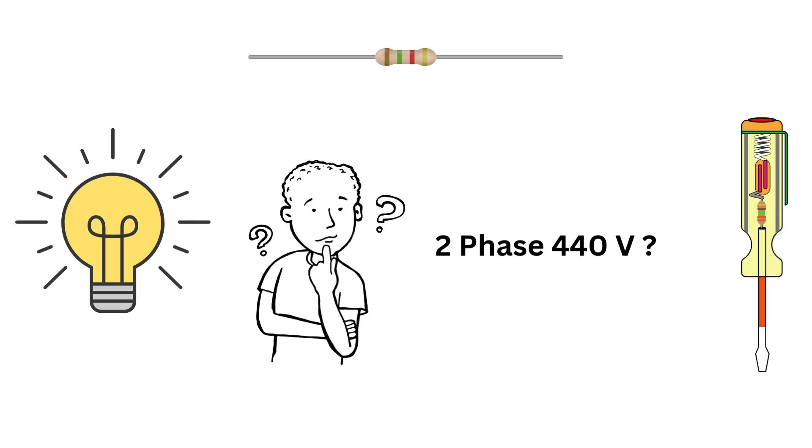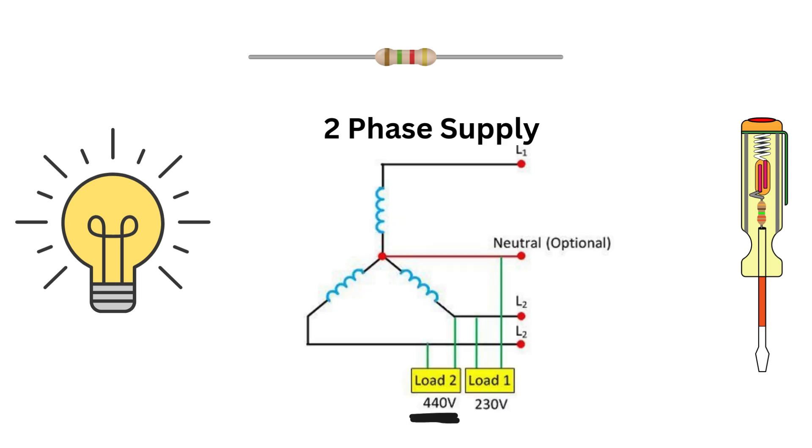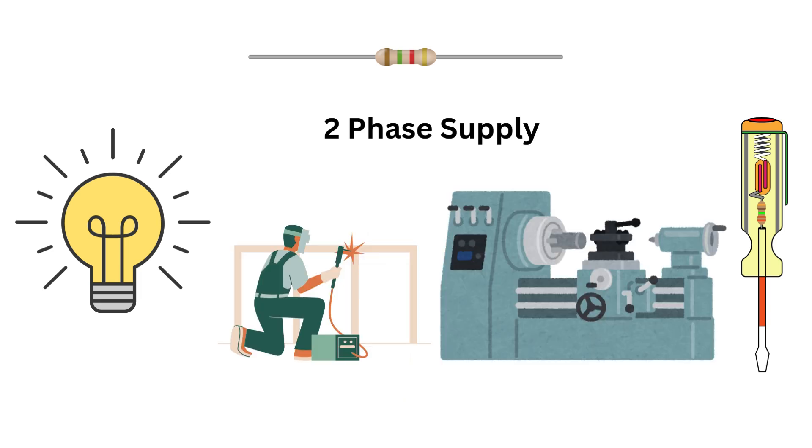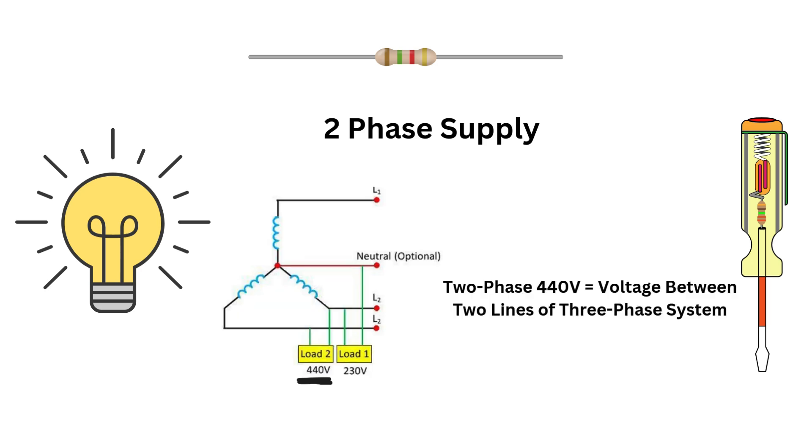What's often called two phase 440 volt is actually two lines of a three phase system. The voltage between these two lines is 440 volts. This type of connection is common in small workshops or heavy appliances. So remember, two phase in this context is just a part of a three phase system, not an independent two phase supply.